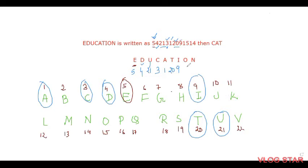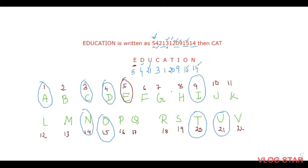O is the 15th letter, so O = 15. N is the 14th letter, so N = 14. So we have now fully decoded the pattern — each letter is replaced by its position number in the alphabet. This is very easy! So now, how will CAT be written?